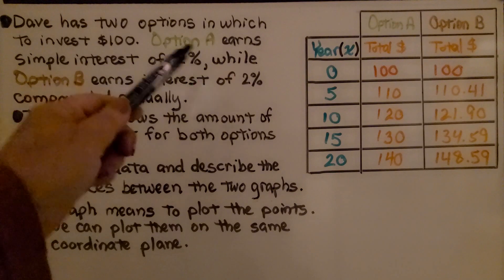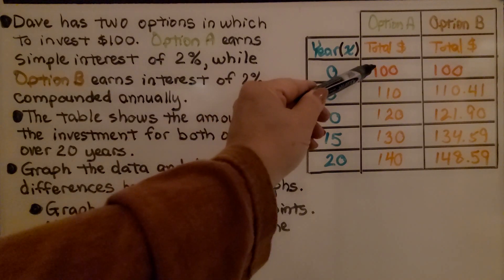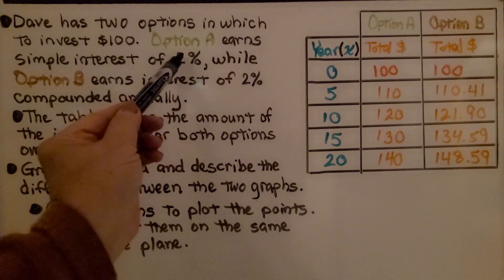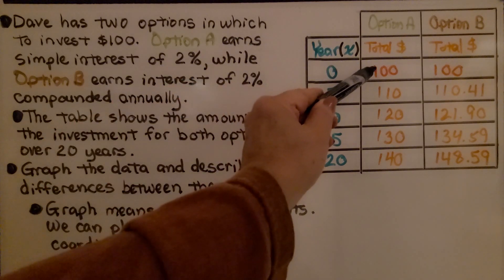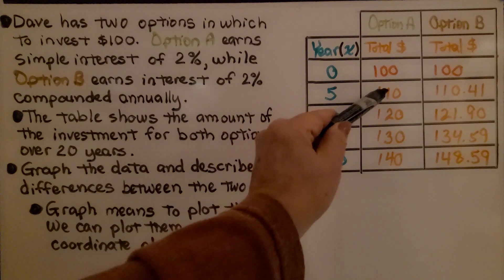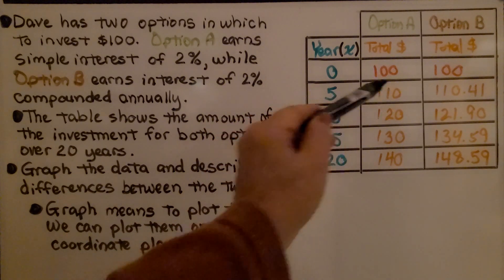When it says simple interest, that means they take the $100 and every year they add 2%. 2% of 100 is $2, so over 5 years it would be $10. The $2 times 5 is $10.